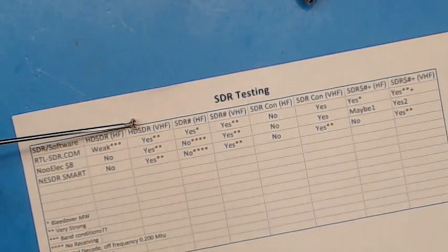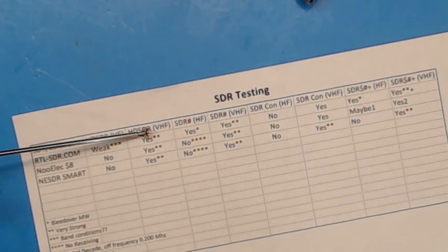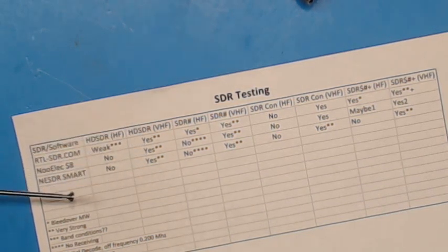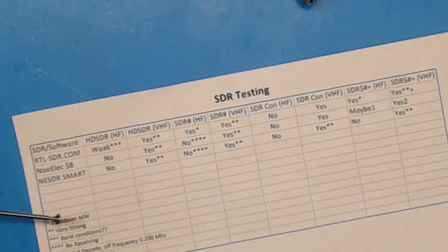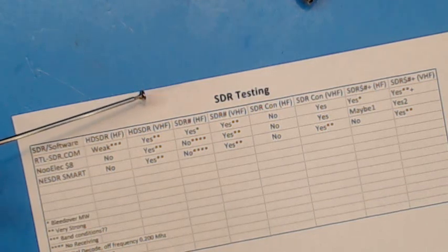I used HD-SDR and checked VHF, went to quadrature mode or whatever it's called, and checked the VHF and UHF bands. My note says the signals were very strong, very strong.